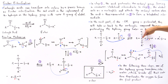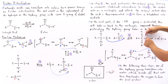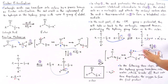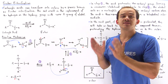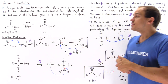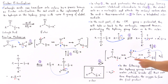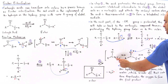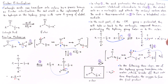Now we weaken the carbon-oxygen bond and it dissociates, forming an intermediate in which we have resonance stabilization — the delocalization of charge among three different atoms — and we also form a water molecule as a result of this departure.